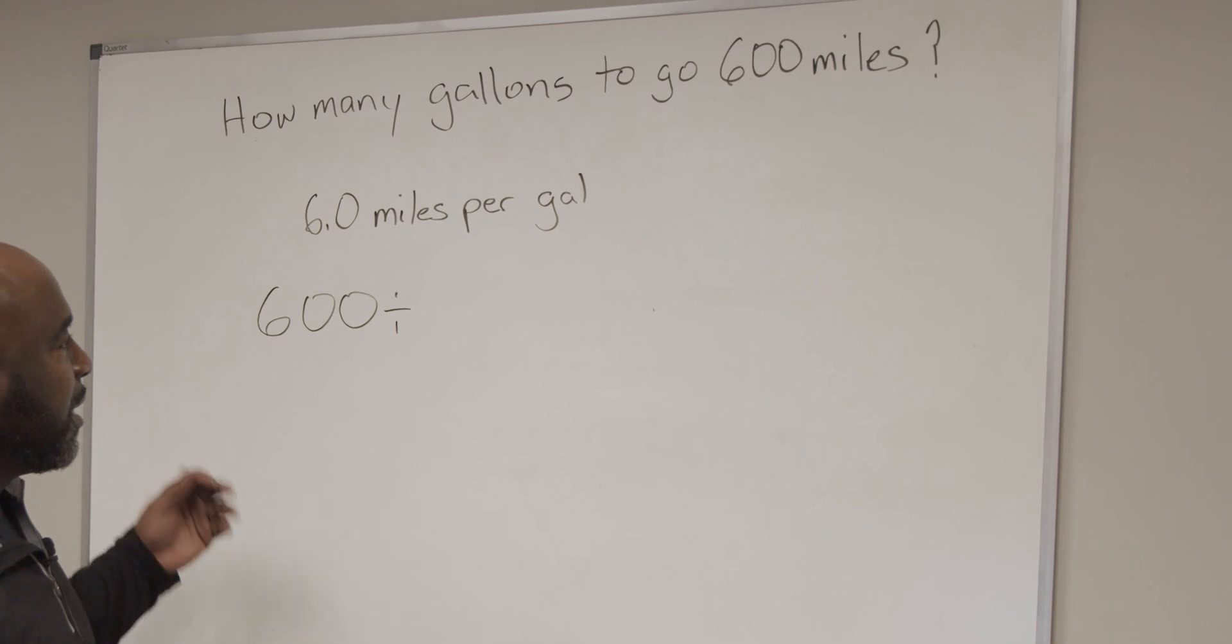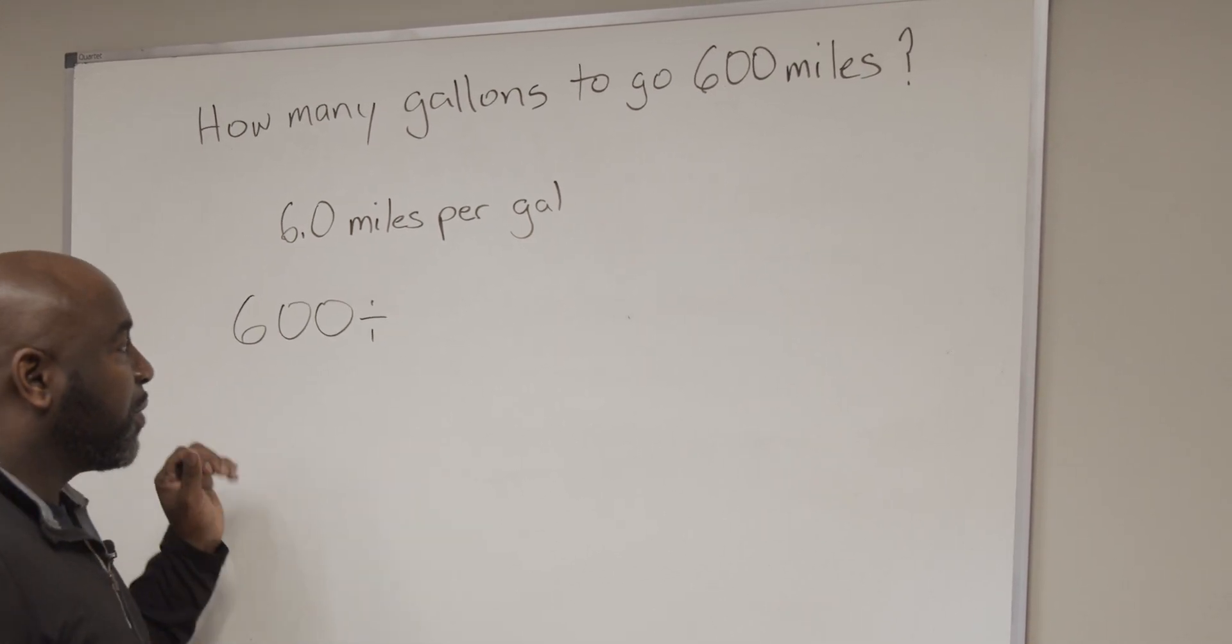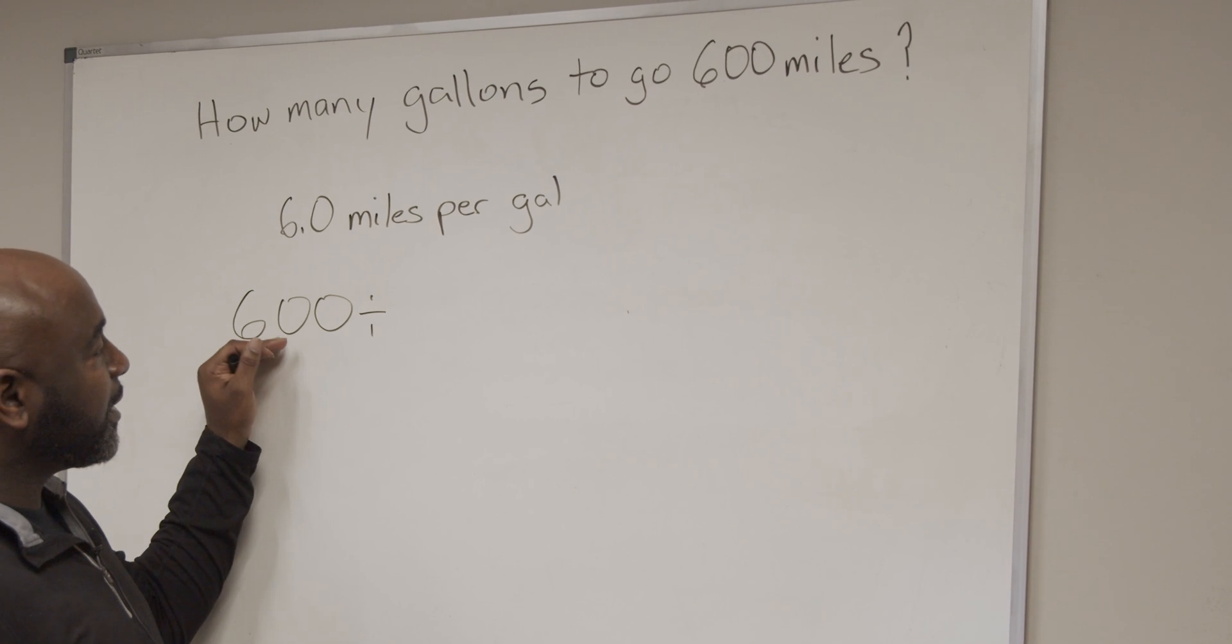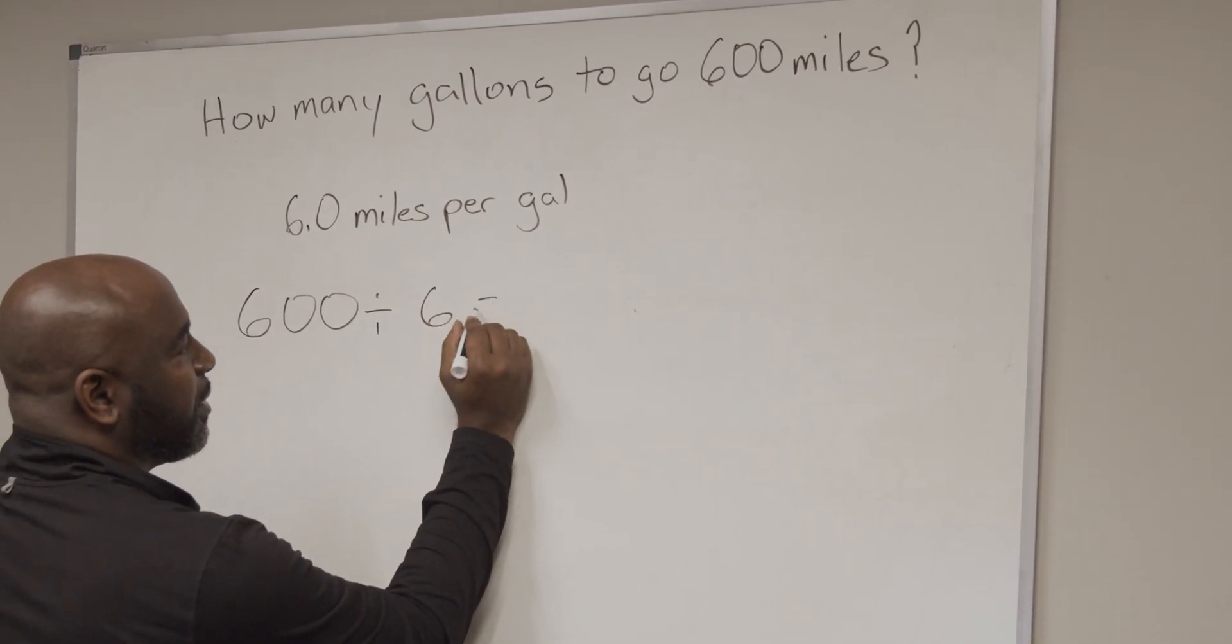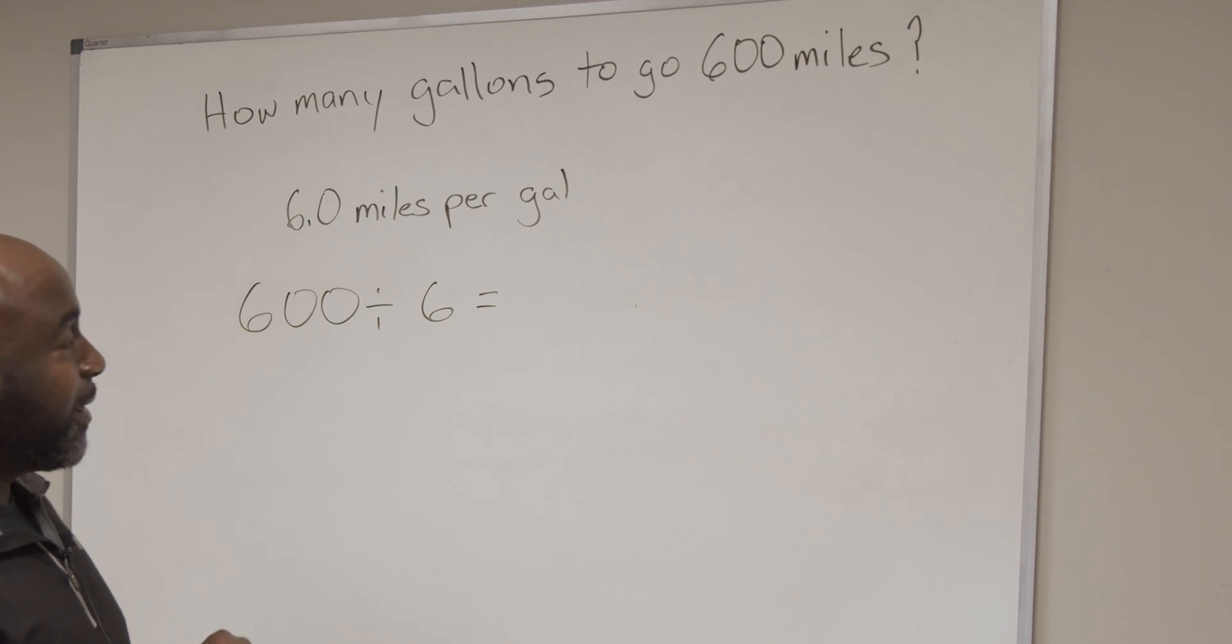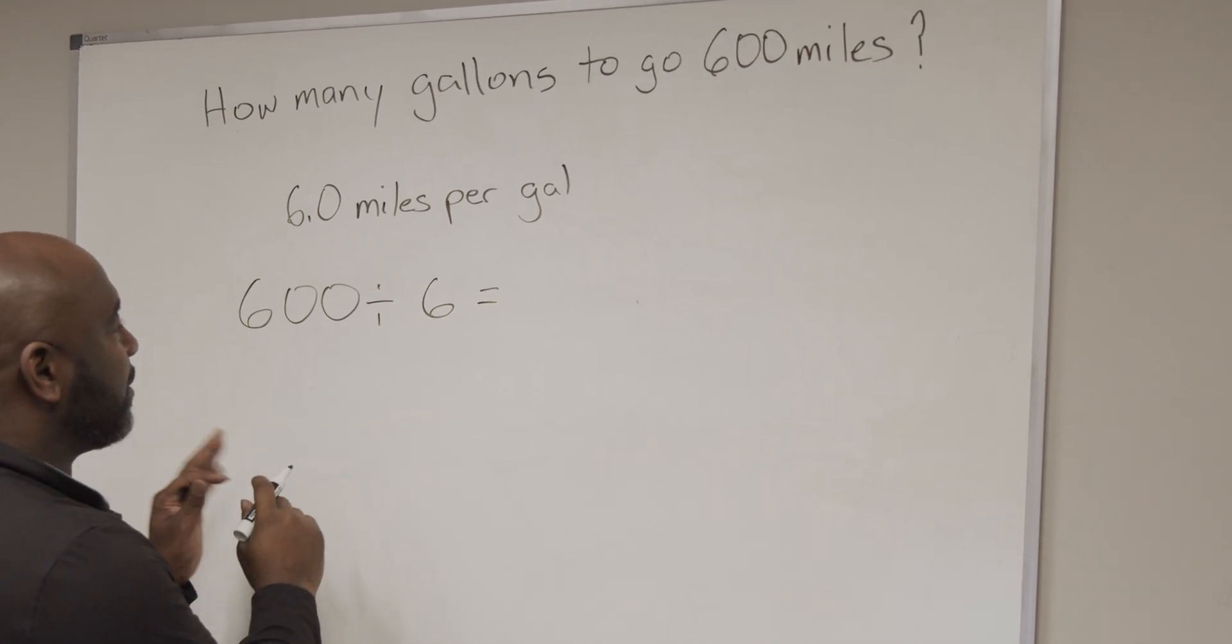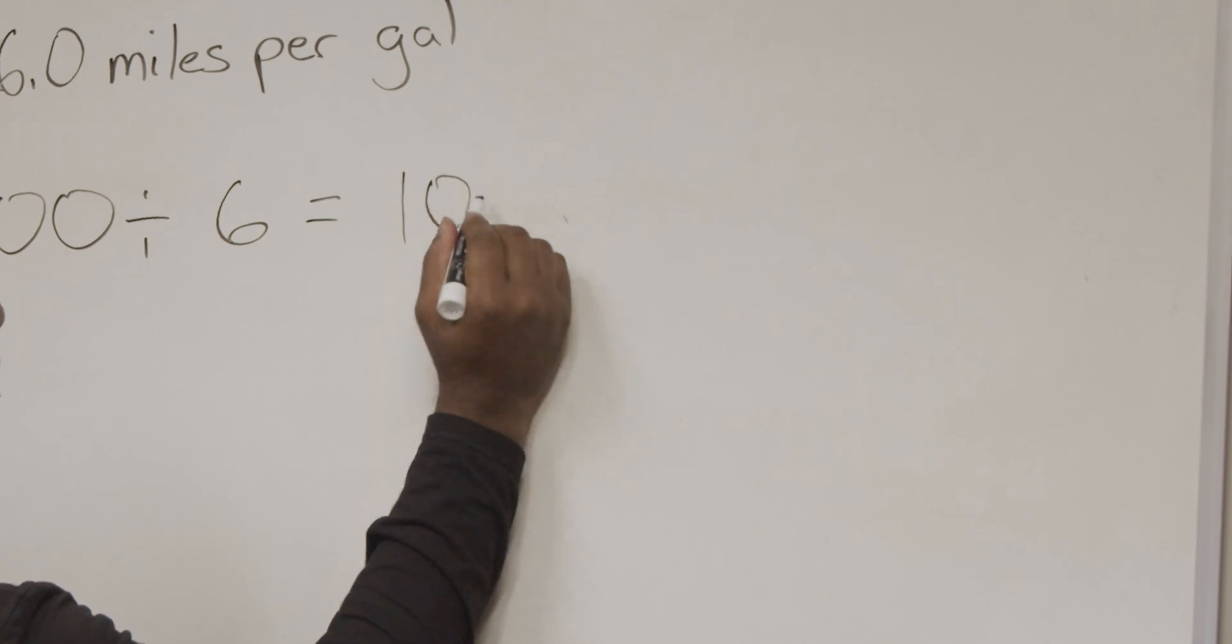So what we're going to do is, in simple math, we've got 600 miles here, and we're going to divide that 600 by 6. And I love simple math. So when you divide, when 600 is divided by 6, that equals 100 gallons.